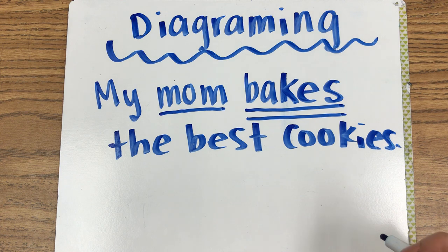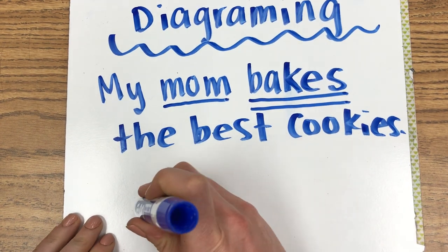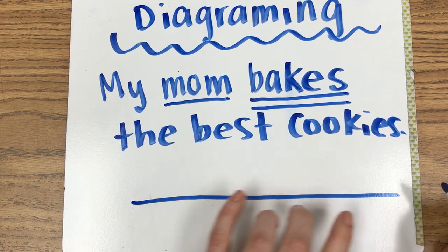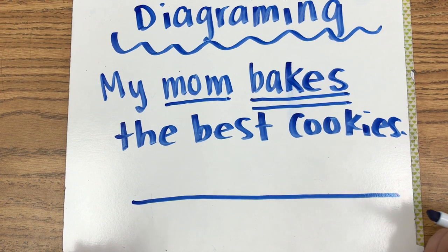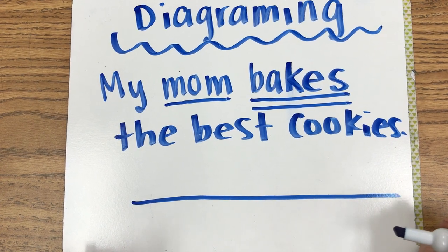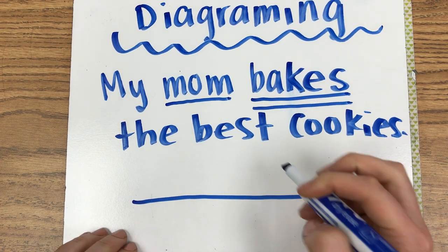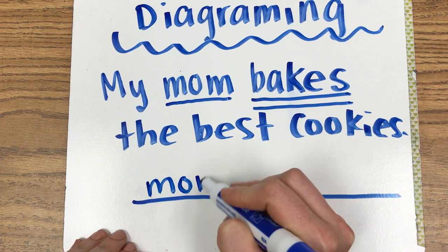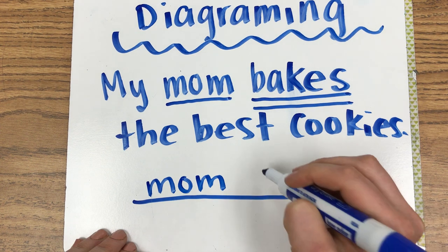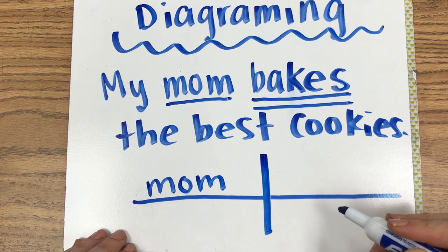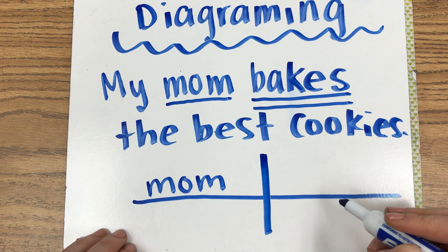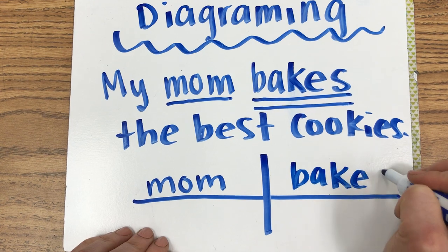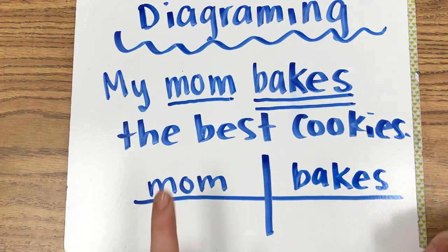So when you see your paper today, it'll make a little bit more sense. On your paper, there's going to be a long line — it's just another way to show how you can break the sentence down. On this line, I'm going to write my subject, which is 'mom.' The subject always comes here, and there's a line that separates it down the middle, separating the subject from the verb. So: mom | bakes. That's how you diagram it — that is your diagram.